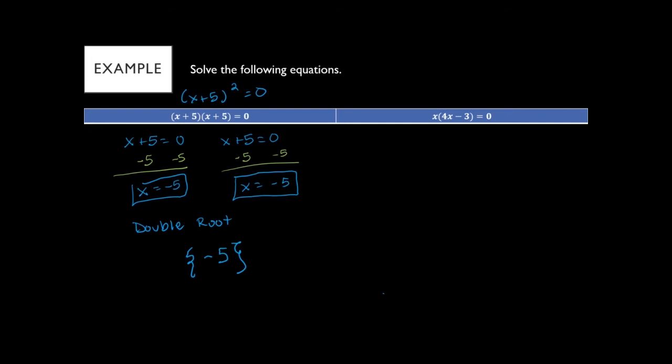In the online system, if you write a double root answer twice, it may mark you wrong. In a traditional classroom setting that wouldn't be marked wrong, but the online system isn't smart enough to handle it. So be careful — write it only once. If you do get it wrong in the online system, when you turn in your work, we can correct that and give you full credit, since the whole reason for turning in work is so we can review it.